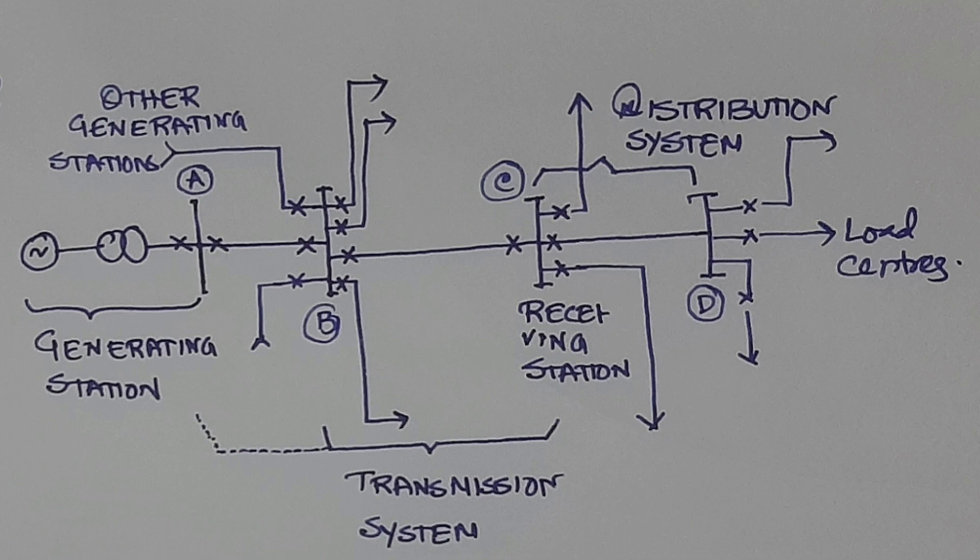It is sending the power through transmission lines. B to C is our transmission system. There are transmission lines generally at the voltage range of 200 kV or 400 kV, 220 kV or 400 kV. At receiving substation C, it is receiving the power